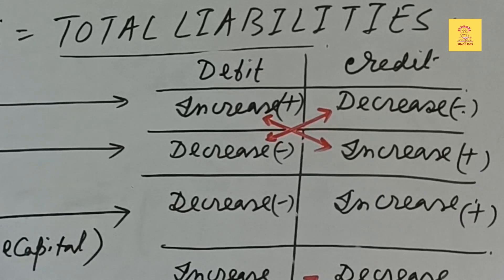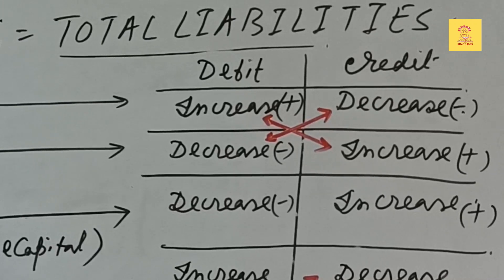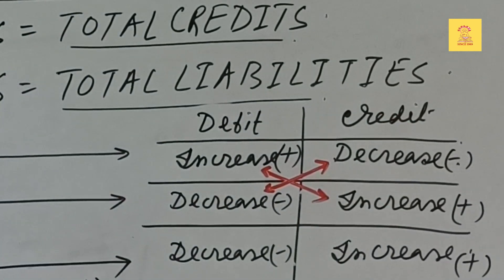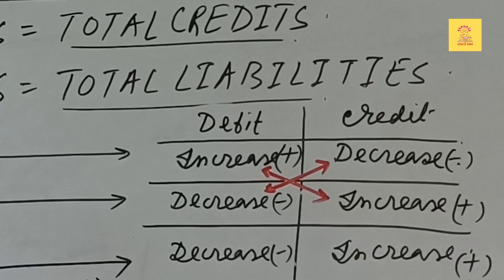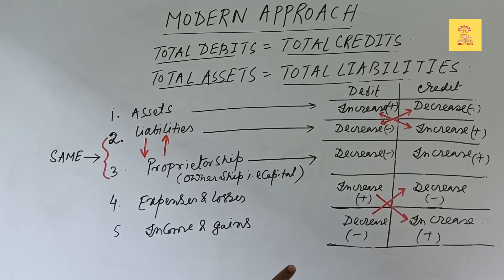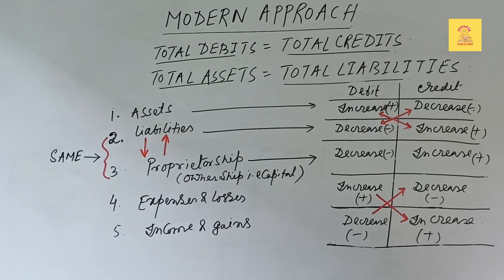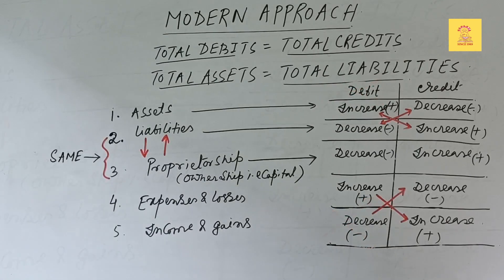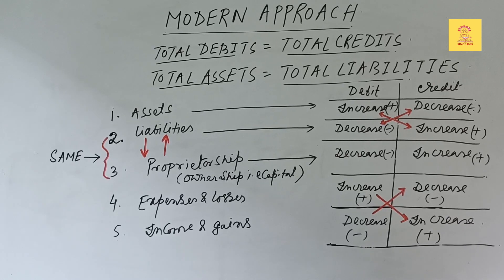The rules for debit and credit in the modern approach consider increase or decrease of assets and liabilities. An increase of assets is a debit, and a decrease of assets is a credit. For liabilities, a decrease is a debit and an increase is a credit. Since assets and liabilities are opposite concepts, the debit of assets equals the credit of liabilities, and they are crisscross in nature.